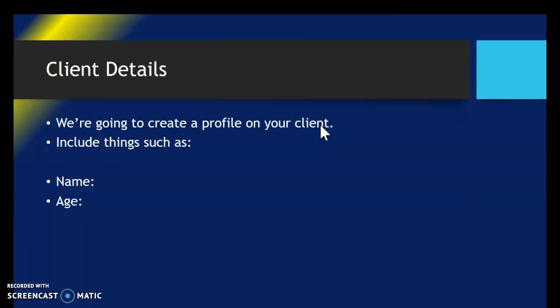This is where you start actually writing up your training program. You need to think about whether you're going to do it as a PowerPoint or a Word document and then start writing. If you're working in pairs, have a chat with the person you're paired up with. If you're doing this by yourself, create your own profile about yourself.